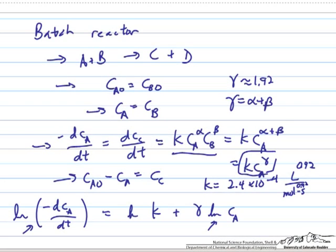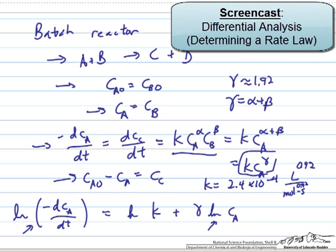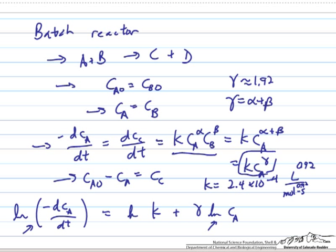This problem is a follow-up on a problem that we considered for a batch reactor using differential kinetic analysis in order to determine the overall reaction order gamma and the reaction rate constant k.